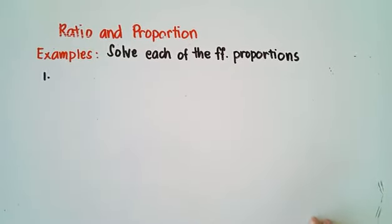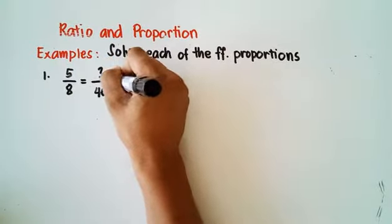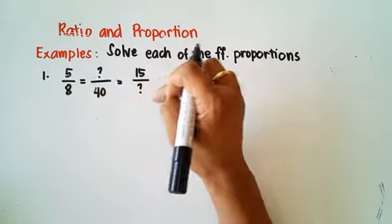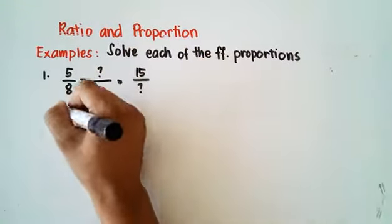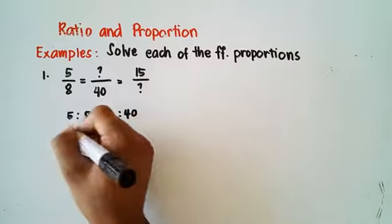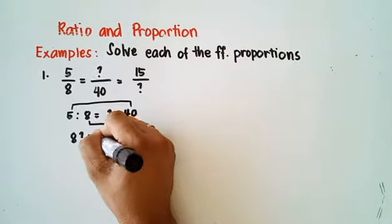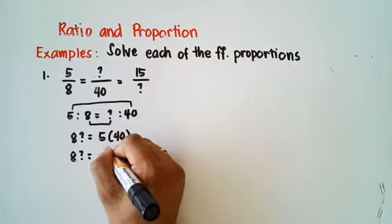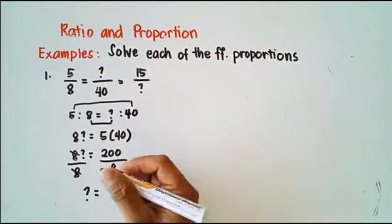Example: solve each of the following proportions. For number one, 5 over 8 equals question mark over 40 equals 15 over question mark. In this proportion, we have three ratios that are all equal. Let's take the first two ratios: 5 is to 8 is equal to question mark is to 40. So 8 times question mark equals 5 times 40. That gives us 8 times question mark equals 200. Divide both sides by 8 — question mark equals 25.